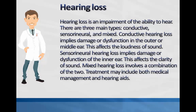Hearing loss is an impairment of the ability to hear. There are three main types: conductive, sensorineural, and mixed. Conductive hearing loss implies damage or dysfunction in the outer or middle ear, and affects the loudness of sound. Sensorineural hearing loss implies damage or dysfunction of the inner ear and affects the clarity of sound. Mixed hearing loss involves a combination of the two. Treatment may include both medical management and hearing aids.